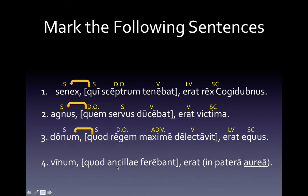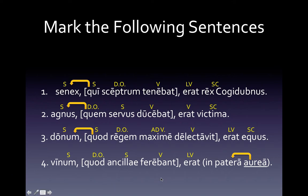Number four: I have 'a quad anculi ferribant' marked off because that is the relative clause. I have 'in patera aurea' set off by parentheses because that's a prep phrase. 'Aurea' is an adjective — both 'patera' and 'aurea' are feminine, singular, ablative, so that's why they go together. Any word that is modifying a word in a prep phrase needs to be part of the prep phrase. For more information on prep phrases, go back and watch the video about prep phrases or write down your questions and ask them in class. 'Quad' is neuter and singular. Outside of the relative clause, we have 'weenum' as also neuter and singular — therefore that's the antecedent. So this sentence will read: 'the wine which the slave girls were carrying was in a gold bowl.'